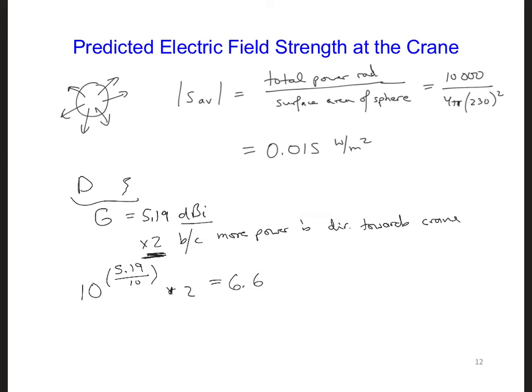This means the power density is 6.6 times higher than it would be for a lossless isotropic antenna. Now we can calculate the power density of the wave from the AM transmitter in the vicinity of the crane. This would be the power density of the lossless isotropic antenna, 0.015, multiplied by the gain in linear form of our antenna, 6.6. So all in all, we got 0.099 watts per meter squared.